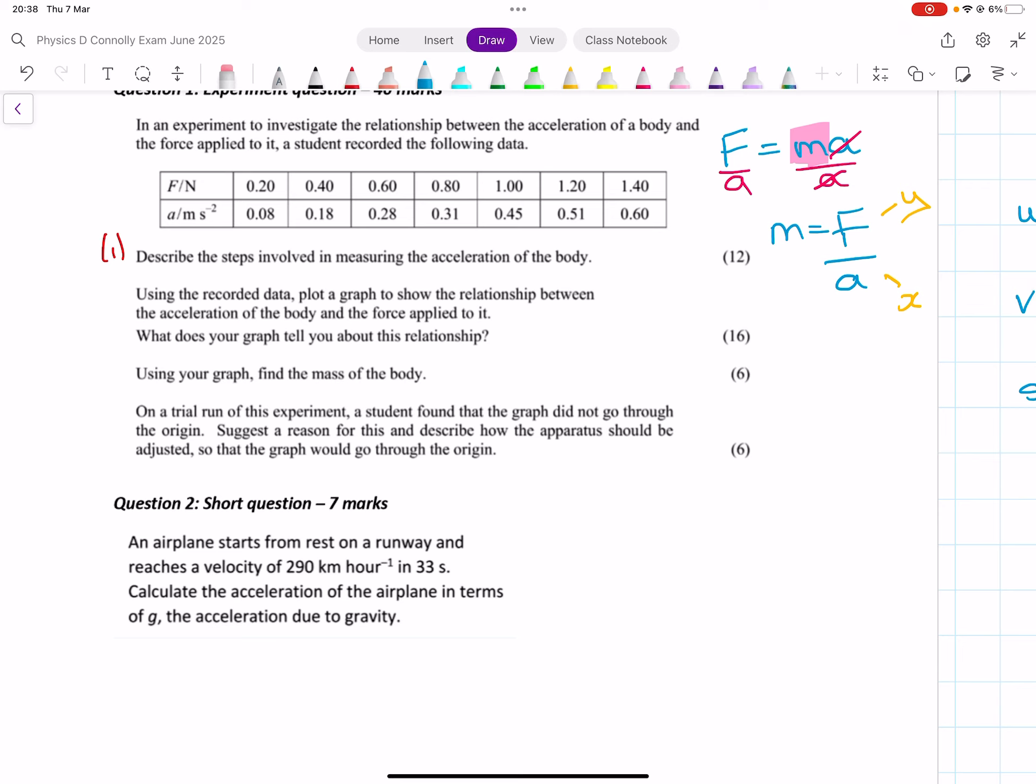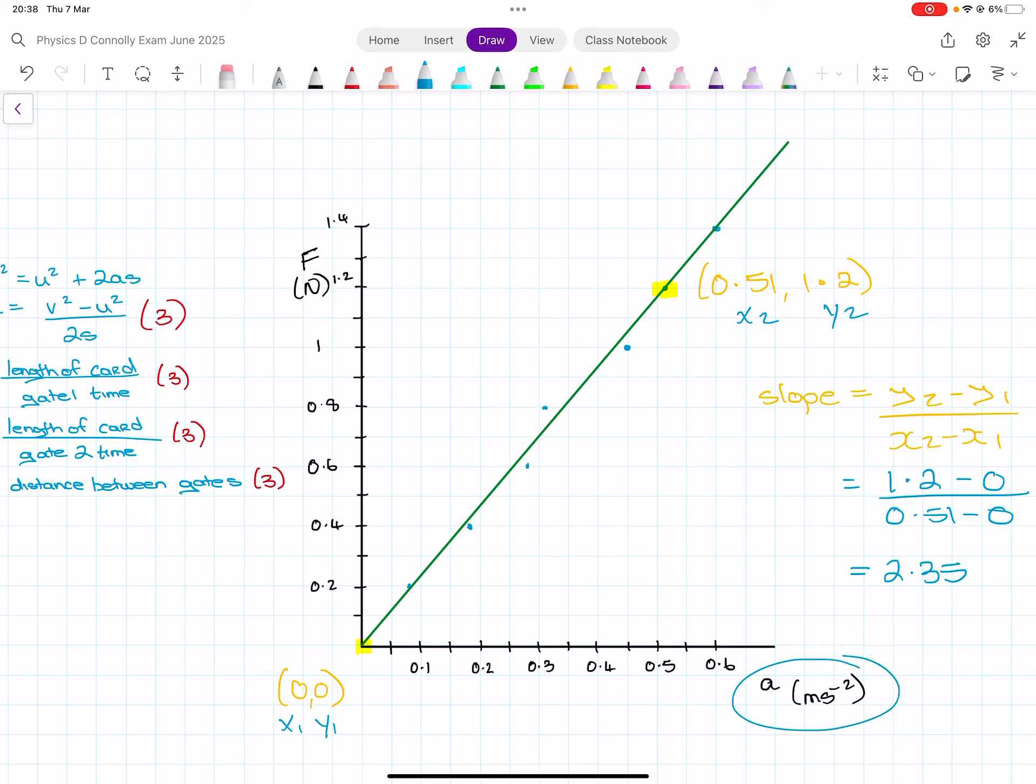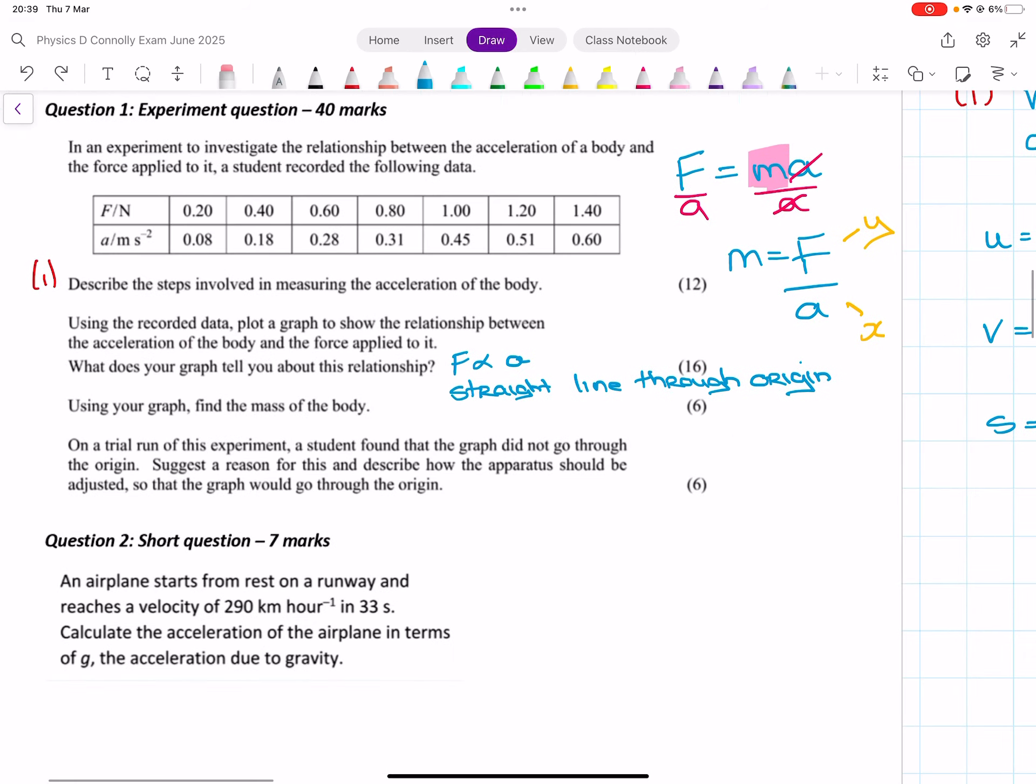So, using the recorded data, plot a graph to show the relationship between acceleration of a body and the force applied. What does the graph tell us about the relationship? So, the graph tells us that force is proportional to acceleration. And the reason we know that is because it's a straight line through the origin. Just in terms of the marks for the graph, so, there's marks for your axis labels, both of them. Marks for choosing an appropriate scale, marks for plotting your points and marks for your best fit line.